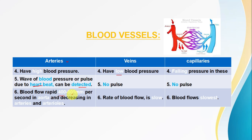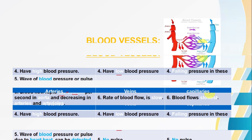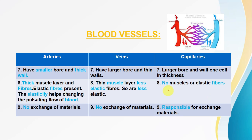Regarding blood flow rate: in arteries, blood flows at 400–500 millimeters per second in the aorta, decreasing in arteries and arterioles. In veins, the rate of blood flow is slower. In capillaries, blood flows the slowest.